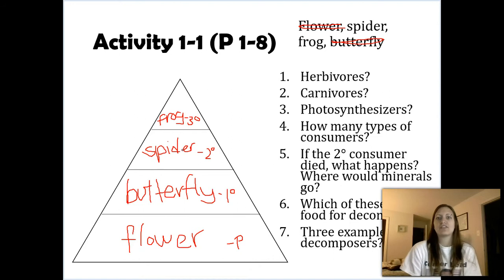The first question asks how many herbivores are there, or what are the herbivores? Well, in this case, we only have one herbivore, and that's our butterfly. Our butterfly is eating plants, and we know herbivores eat plants. So we have one herbivore, and that herbivore is the butterfly.